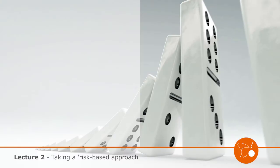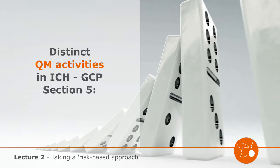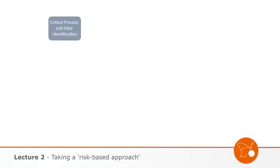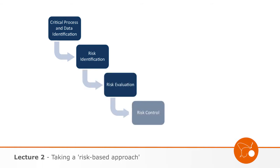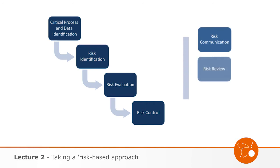The ICH GCP approach calls for distinct quality management activities that can be optimized through a risk-based approach. In Section 5, the guideline lists the following activities: identify critical processes and data, identify risks to critical trial processes and data, evaluate risks, control risks, communicate risks, review risks, and report risks.